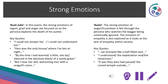We are now going to look at the theme of strong emotions. In Aunt Julia, the strong emotions of grief, regret and anger are focused on as the persona explores the death of his auntie. Key quotes: 'I could not answer her, I could not understand her', 'Hers was the only house where I've lain at night', 'By the time I've learned a little, she lay silenced in the absolute black of a sandy grave', and 'But I hear her still, welcoming me with a seagull's voice.' In Assisi, the strong emotions of anger and frustration are felt through the persona who watches the beggar being continually ignored. The emotion of empathy is also explored as it looks at the lack of empathy within society.